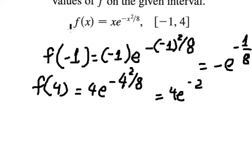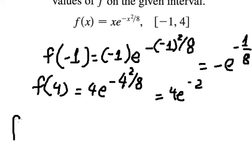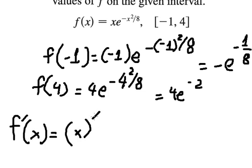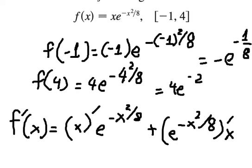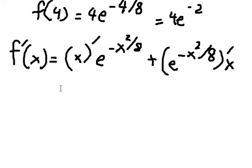Now we need to find the derivative of this function. We need to find the derivative of s multiplied by e to the power of negative s squared over eight. This is about the product rule of the derivative.